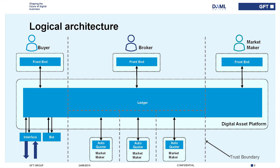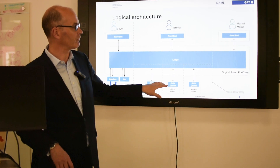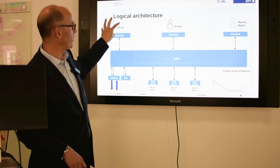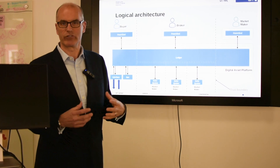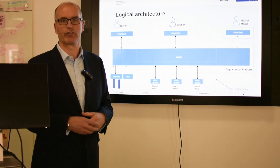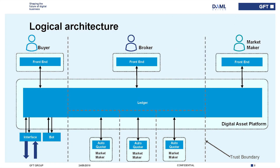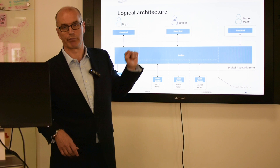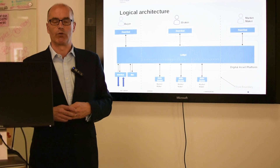So just before we start, we're going to see the architecture. Very simply, we have a distributed ledger running across all six parties — three actual real parties and three auto-quoters. The real parties have a front end, and the auto-quoters are essentially bots that listen to events off the ledger and respond. The ledger runs across all six parties, typified today by running it across three laptops. All the auto-quoters are actually going to run on the broker's laptop today. These trust boundaries show you where the divisions would be.